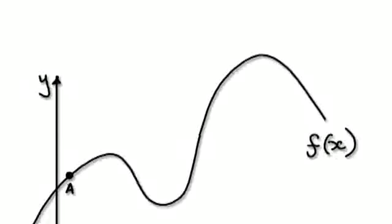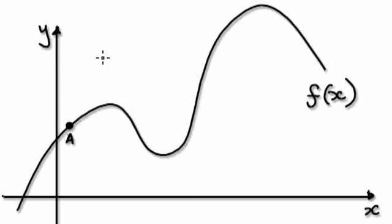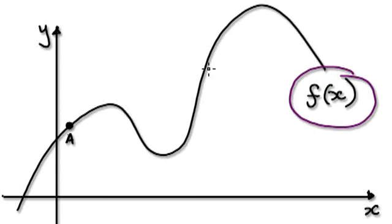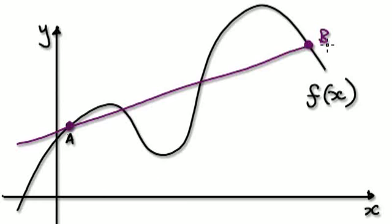Following on from the previous video, our aim is to find out the gradient at any given point on this function. Suppose you have a function f of x, and any other point on the line - let's say point a. We want to find out the gradient at a, and the way we do that is to set up another point, let's say capital B, and then work out the gradient of this line here.